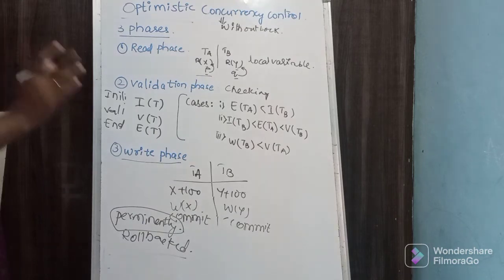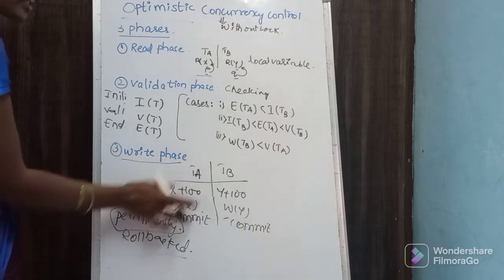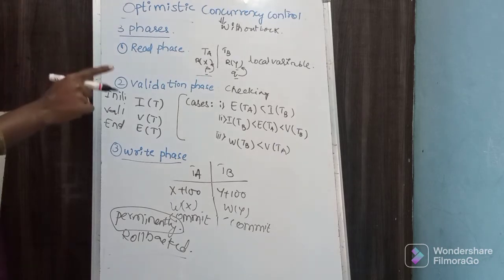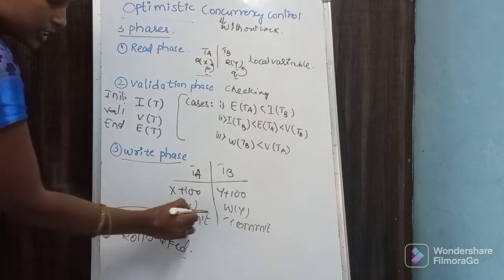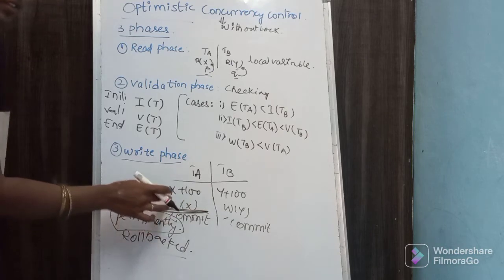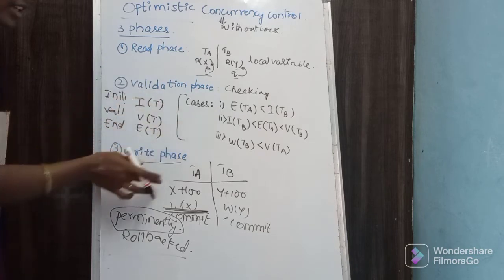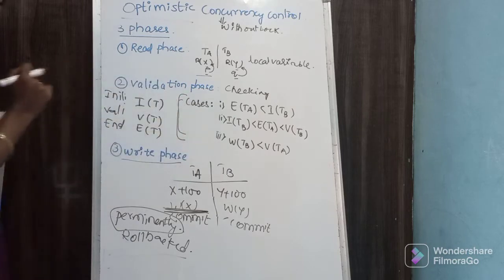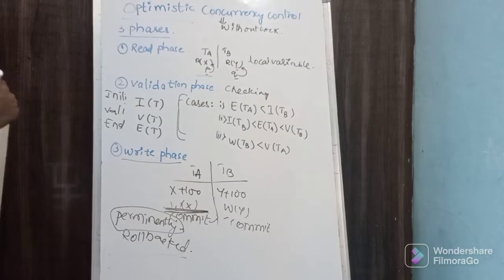When you say permanently store or rollback, the data must satisfy three cases. If these three cases are satisfied, then only you perform a commit. You have to check the read phase, validation phase, and write phase. If three conditions are satisfied, then commit and store the data permanently in the database.